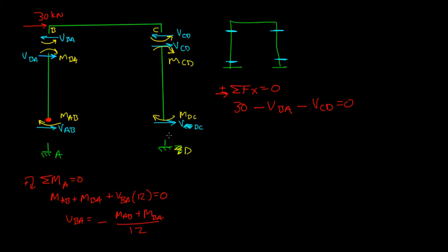And if I looked at, now I'm going to look at member CD, and I decide to take the moment about this point D. I'm going to get sum of the moments about point D is equal to 0. Let's just say clockwise is positive. That means I'm going to get MCD plus MDC plus VCD times the height 12, or the distance, is equal to 0.